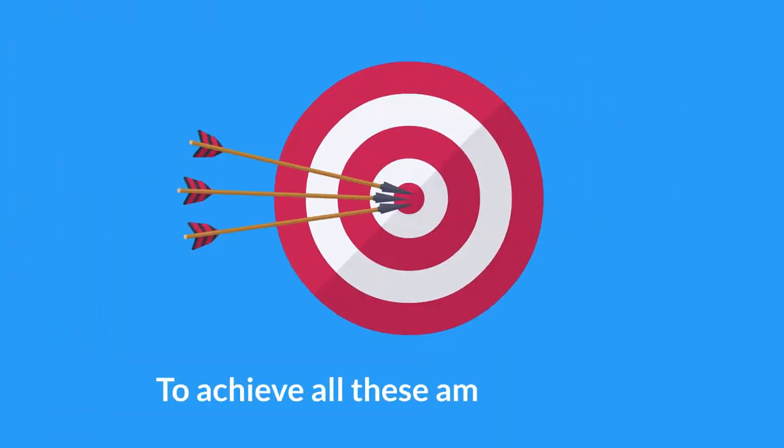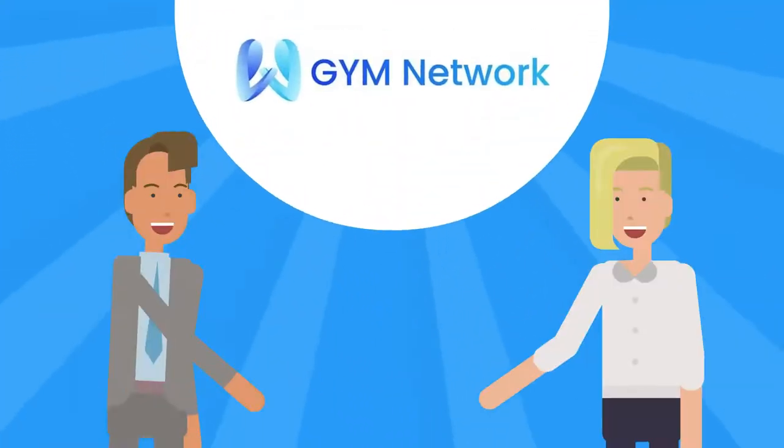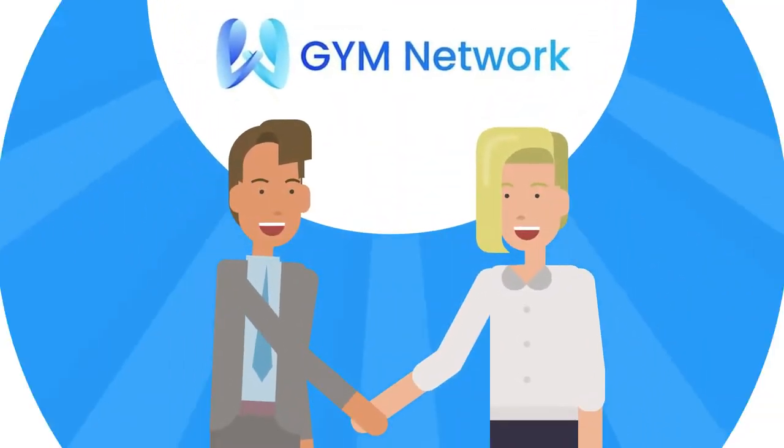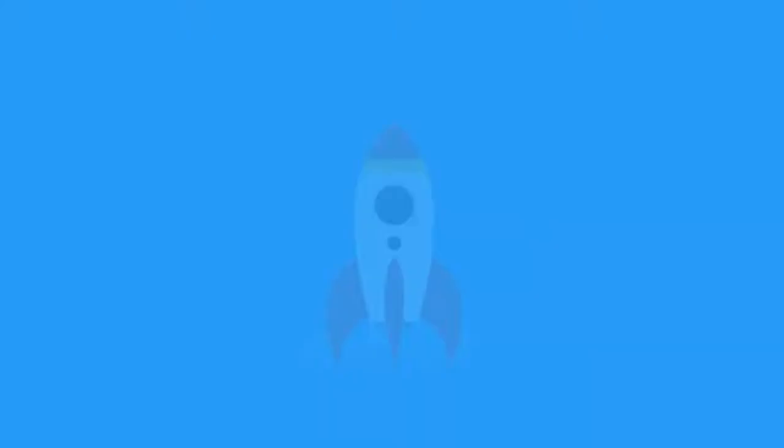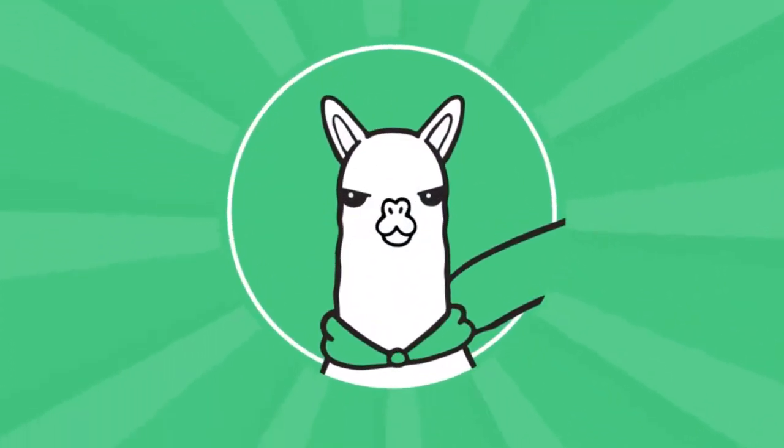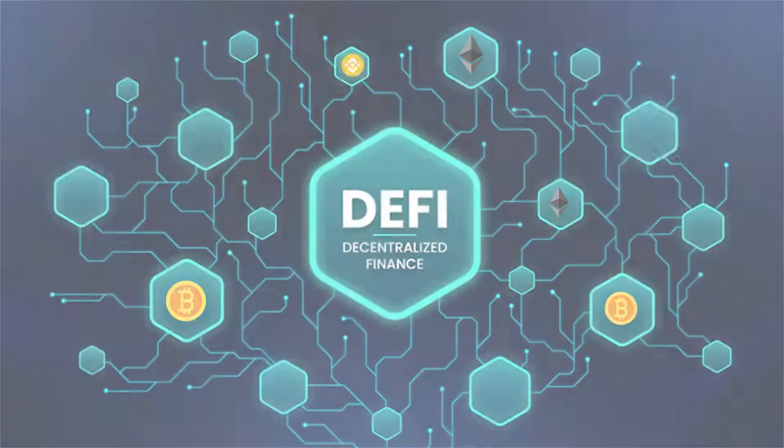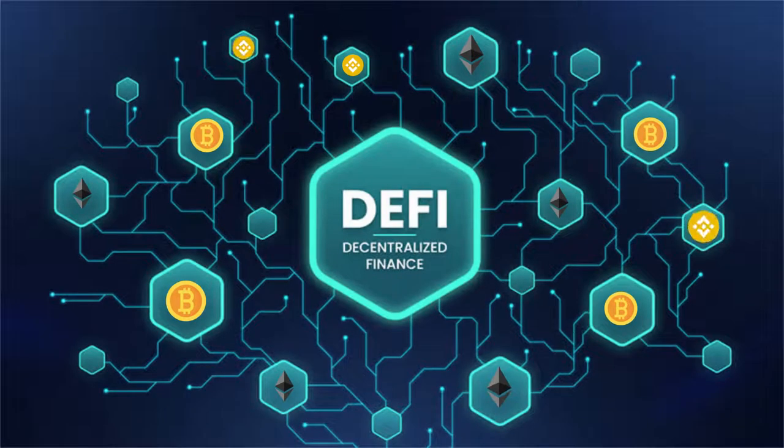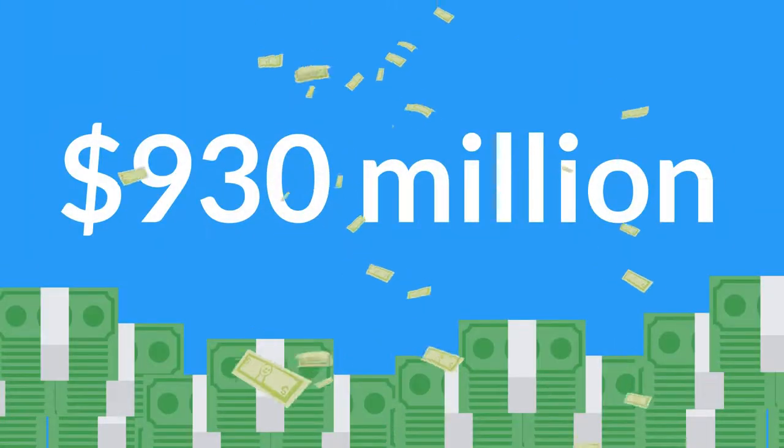To achieve all these ambitious goals, Jimnetwork has partnered up with the biggest names in the industry. Binance Smart Chain is the underlying blockchain to power the ecosystem. Alpaca Finance is one of the top-rated DeFi protocols on the Binance Smart Chain, with a total value locked of $930 million.